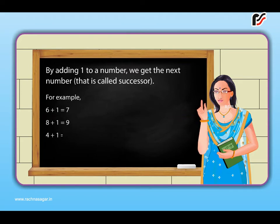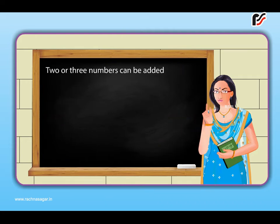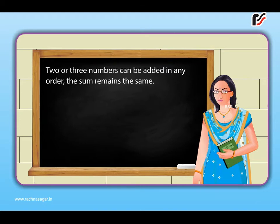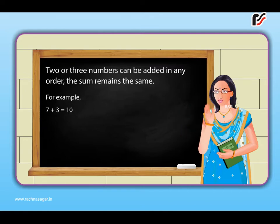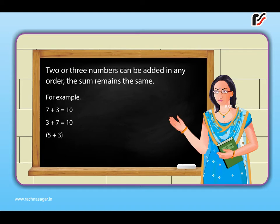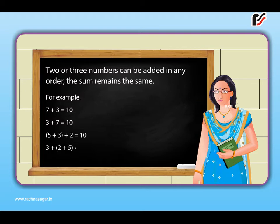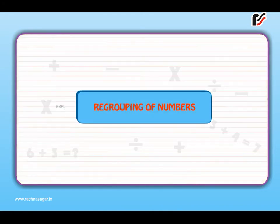4 plus 1 is equal to 5. Two or three numbers can be added in any order; the sum remains the same. For example, 7 plus 3 is equal to 10, and after changing the order, 3 plus 7 is also equal to 10. Let's add 5 plus 3 plus 2, which equals 10. After changing the order, 3 plus 2 plus 5 is also equal to 10.